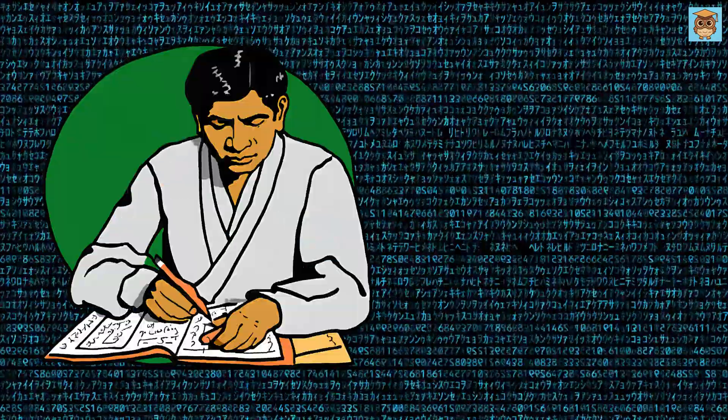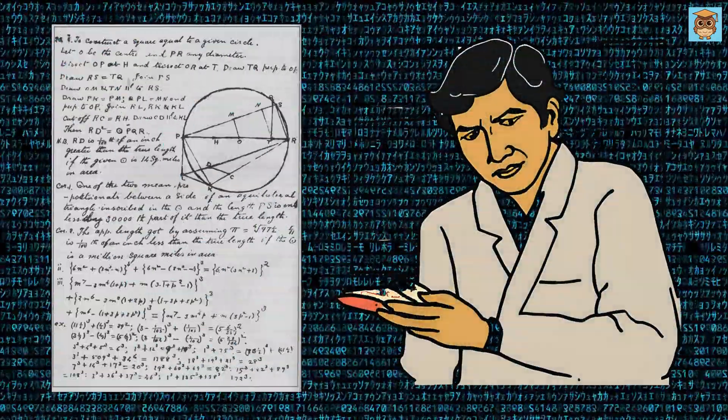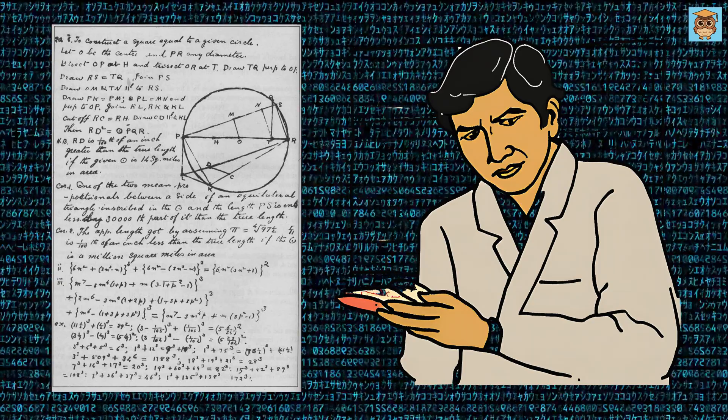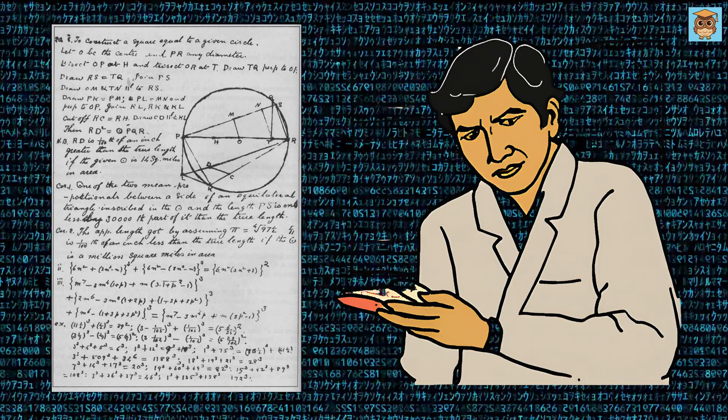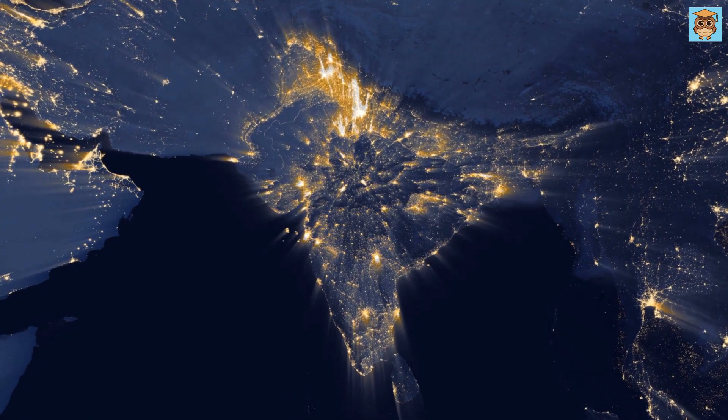Imagine a man who could see numbers in ways no one else could. A man who, without formal training, uncovered deep secrets of mathematics. This was Srinivasa Ramanujan, a genius from India whose mind worked like magic.